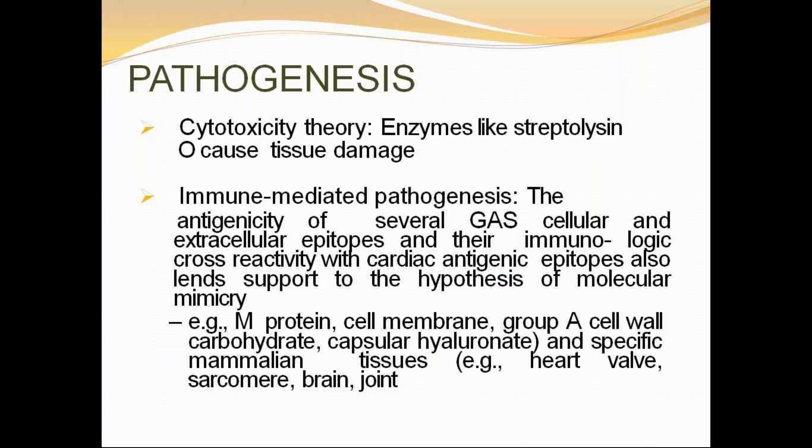Another mechanism is binding of M protein N-terminus domain to a region of collagen type 4, leading to an antibody response to collagen, resulting in ground substance inflammation especially in subendothelial areas like cardiac valves and myocardium. When writing pathogenesis, remember the three theories. The most important is immune-mediated pathogenesis, which explains the 10 to 21 day latency period before acute rheumatic fever appears.